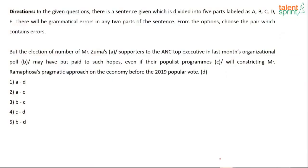Let's begin with the session. In the given questions, there is a sentence divided into five parts labeled A, B, C, D, E. There will be grammatical errors in any two parts - not just one. From the options, choose the pair which contains the error. You're supposed to choose the options which have an error.